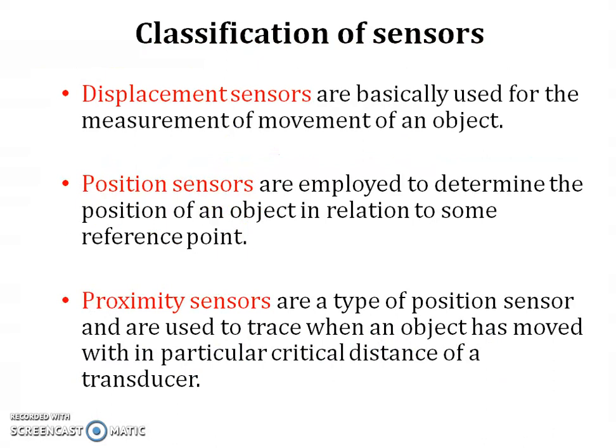Classification of sensors: displacement sensors are basically used for the measurement of movement of an object. Position sensors are employed to determine the position of an object in relation to some reference point. Proximity sensors are a type of position sensor and are used to detect when an object has moved within a particular critical distance of a transducer. Thank you.